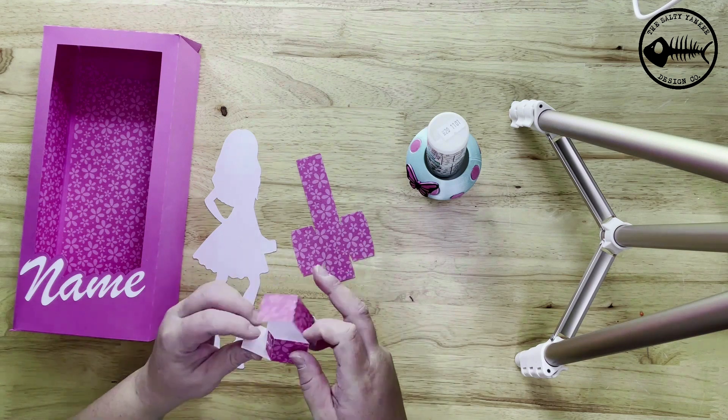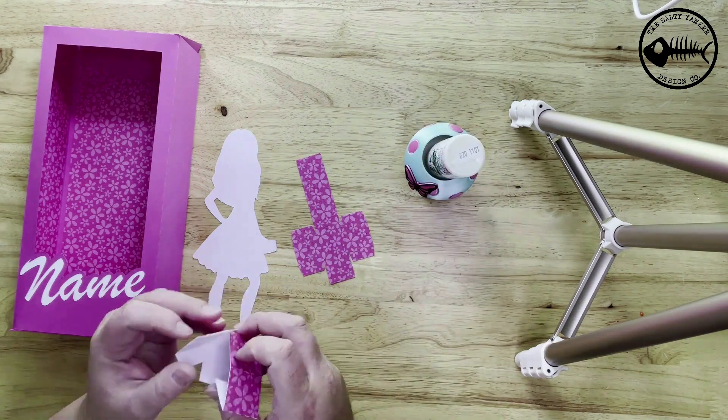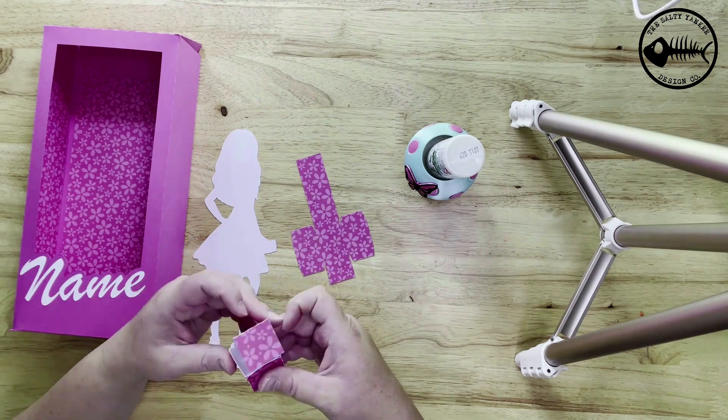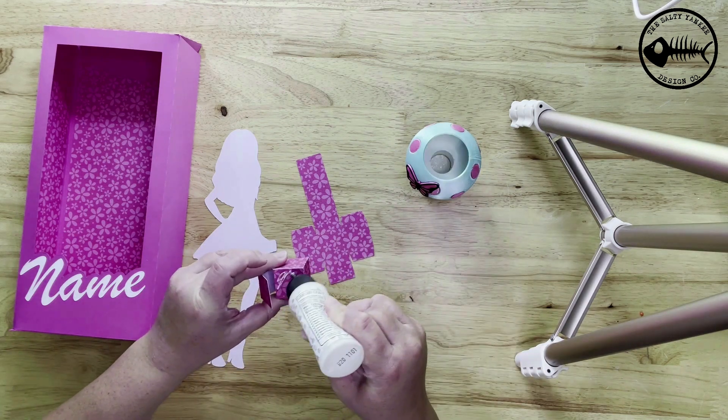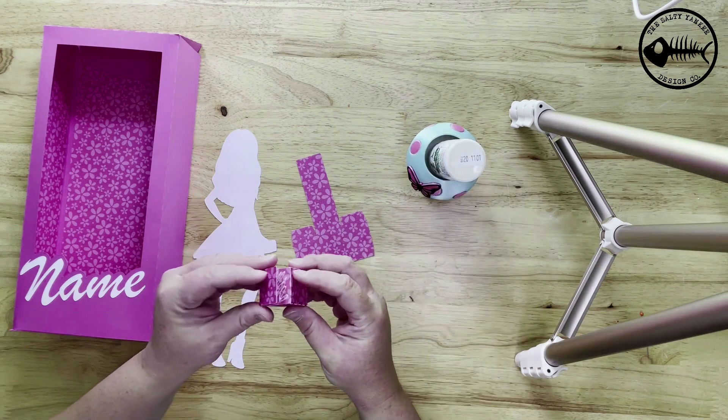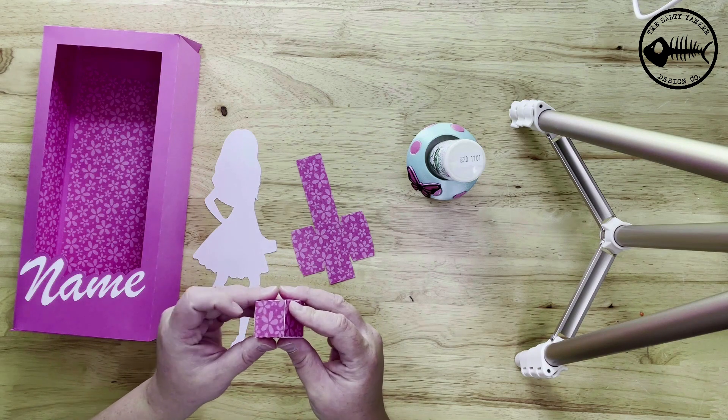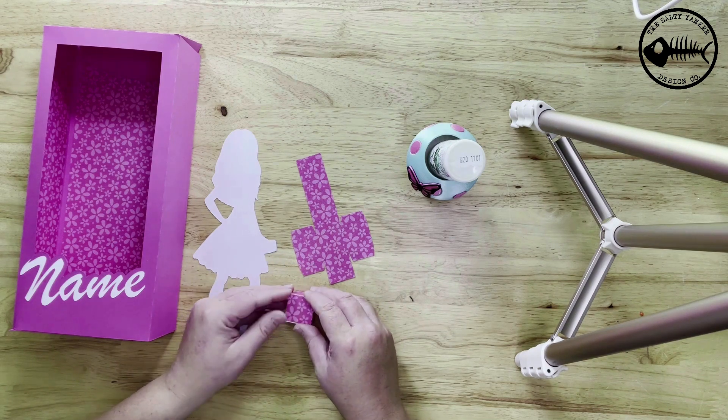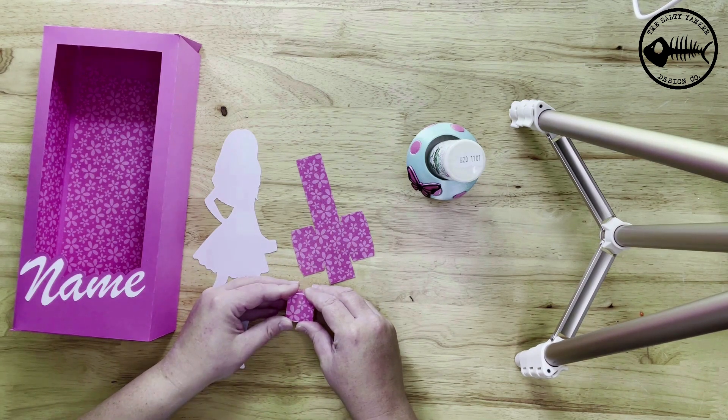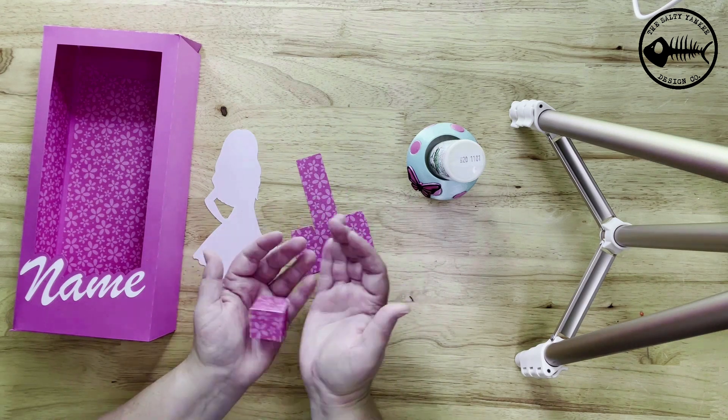These two cubes, I'm just running through this really quickly because they're just a simple folding cube. You don't have to use these. You could use foam cubes instead. The reason I included these is because they push the Barbie out quite a bit so she's not so far back into the box. Once you use these cubes and put her in there, she's kind of forward facing and sort of standing out and gives it a little bit more of a 3D effect.